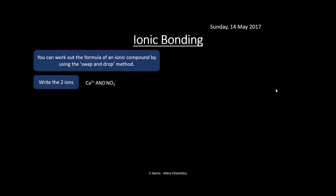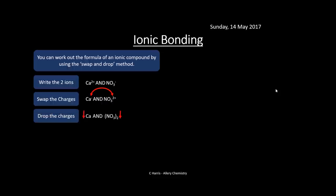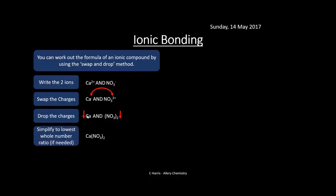We can work out the formula of ionic compounds using the swap and drop method. First, write down your two ions - for example calcium 2+ and NO3-. Swap the charges over, so you get a minus on the calcium and two plus on the nitrate. Then drop the charges and put the numbers as subscripts, placing brackets around NO3 to give Ca(NO3)2, calcium nitrate. Another example: Ca2+ and O2-. Swap to get 2- and 2+, drop to get Ca2 and O2, then combine and simplify to CaO - calcium oxide.